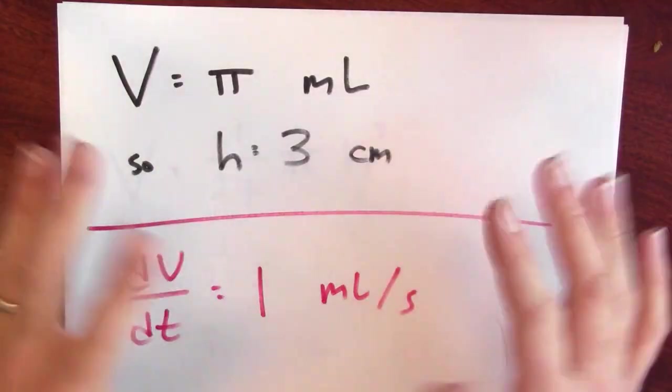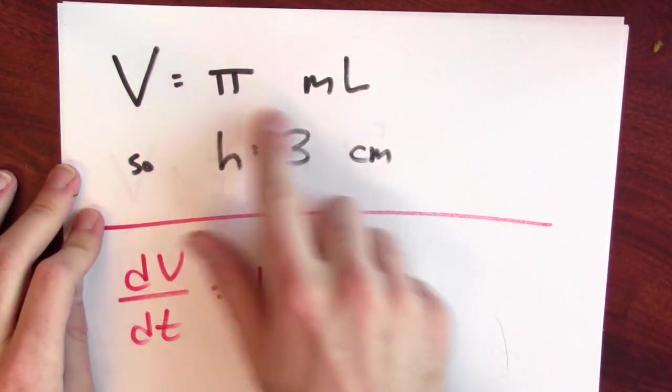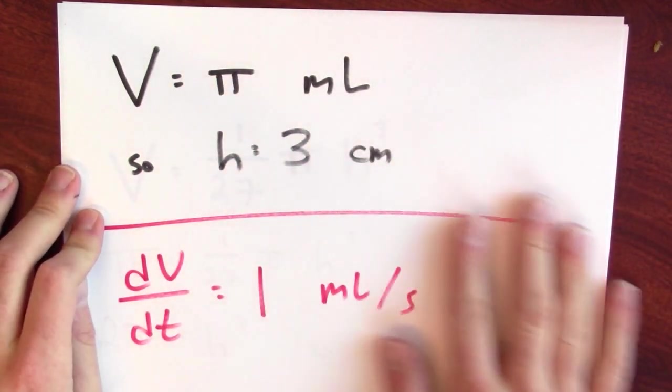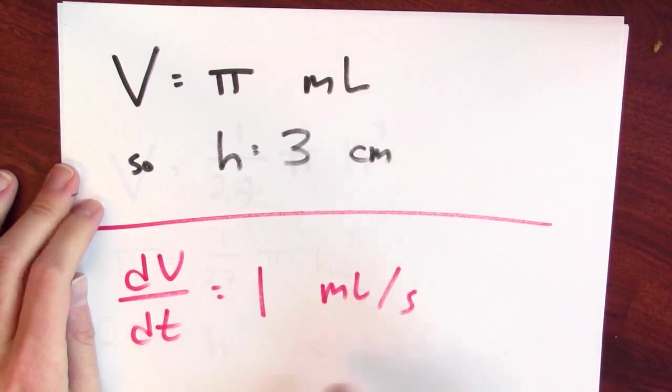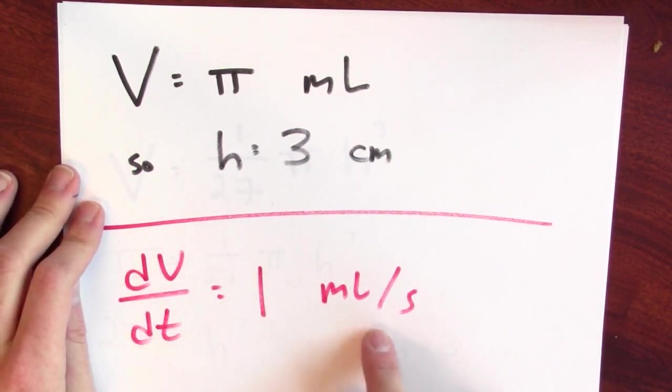To finish this problem off, remember what I'm trying to do. I'm trying to figure out dh/dt. I know V at this particular moment, and I know dV/dt. That's enough information for me to figure out dh/dt. Let's see how. Well, here's what I'm initially told. I'm told that there's π milliliters of water currently in the cone, and I'm told that more water is pouring in at a rate of 1 milliliter per second.